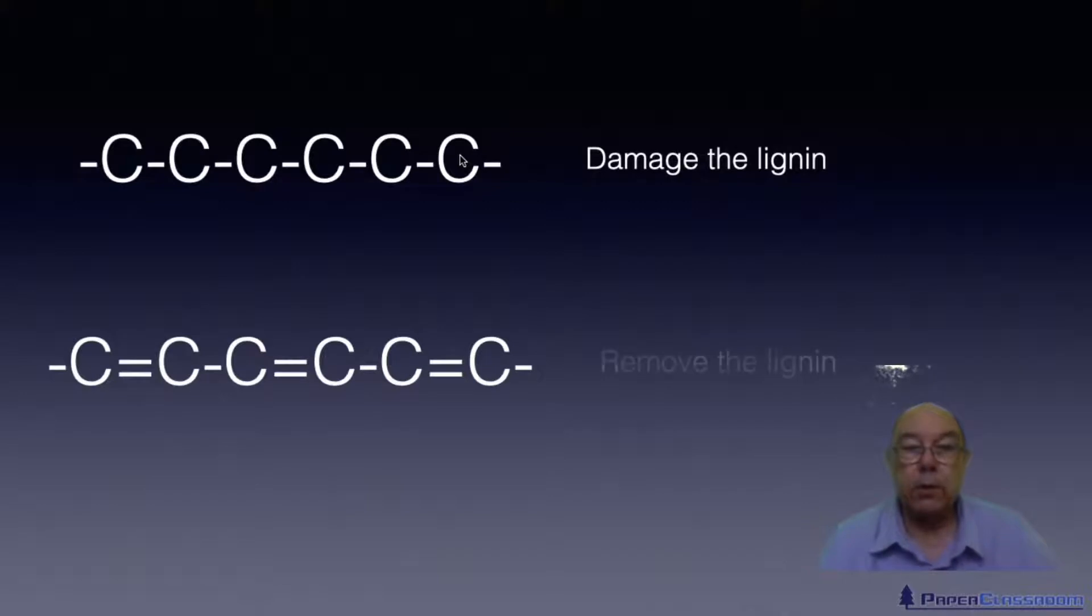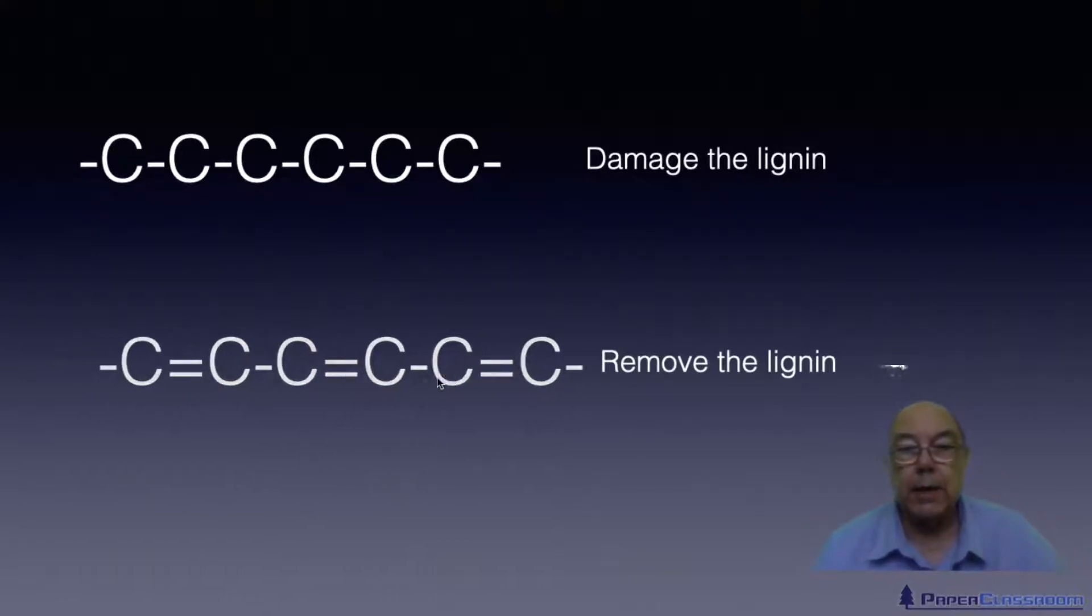The other thing you can do is to actually remove the lignin altogether. So here's the lignin in its troublesome form with the double bonds that are going to give us a yellow or brown. Get rid of it. That's the alternative. So you've got these two strategies for bleaching. Either damage the lignin or remove the lignin.